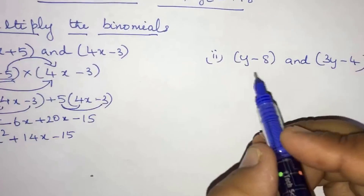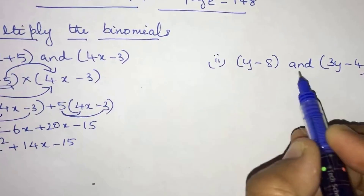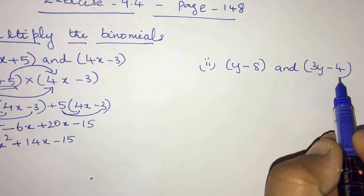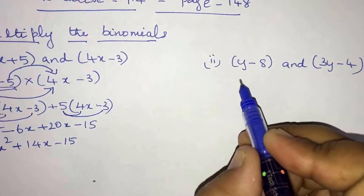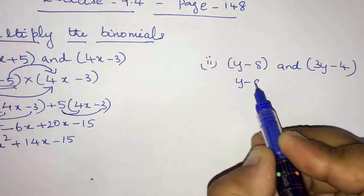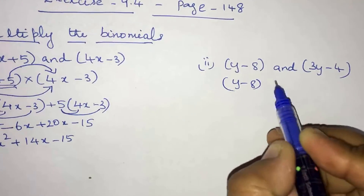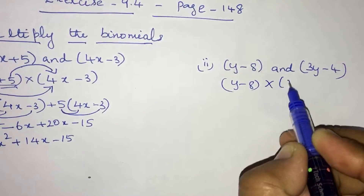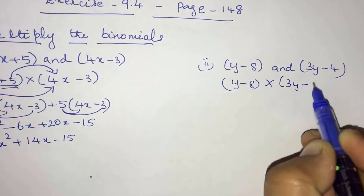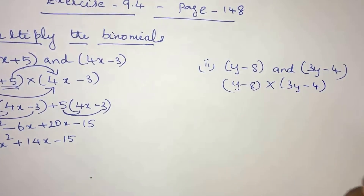Question number 2: multiply y minus 8 and 3y minus 4. So we set up (y - 8) into (3y - 4).